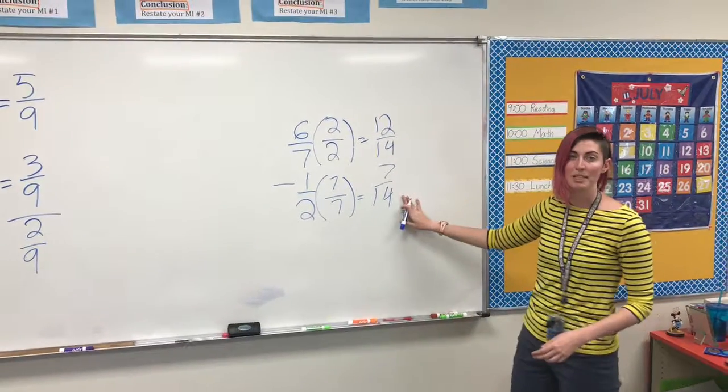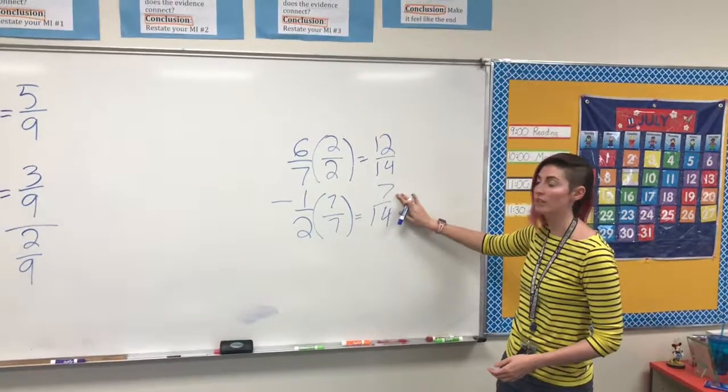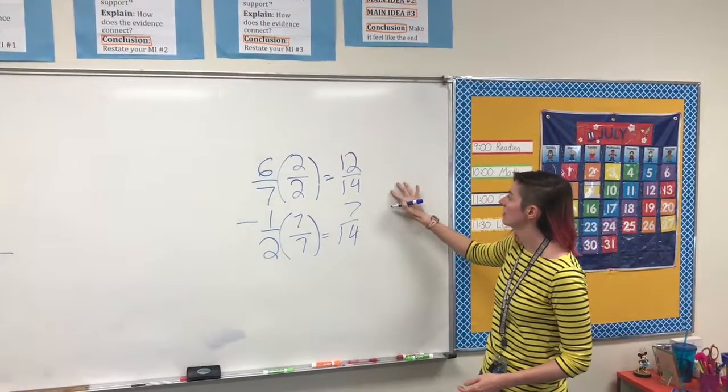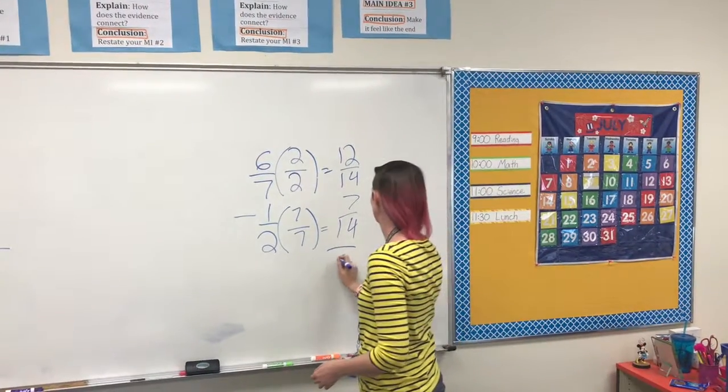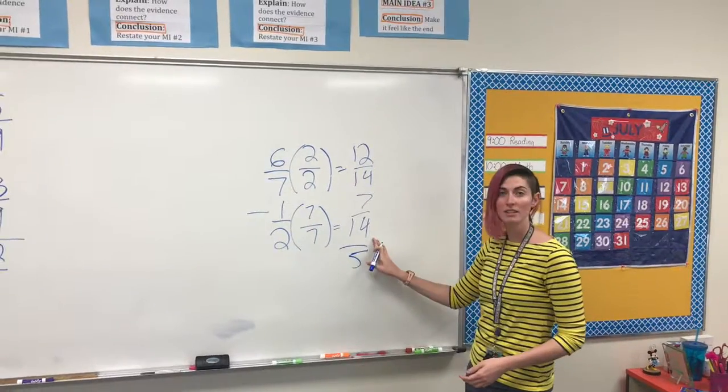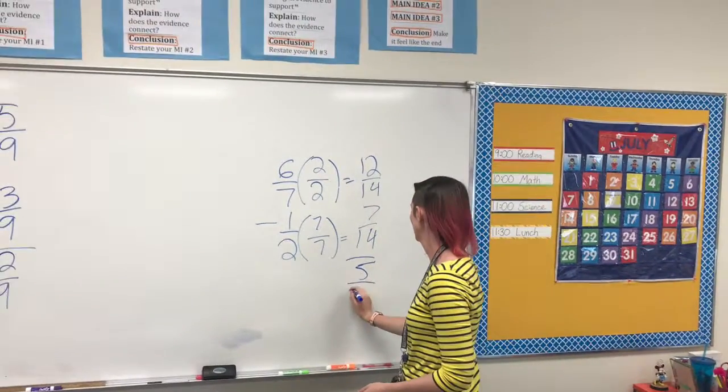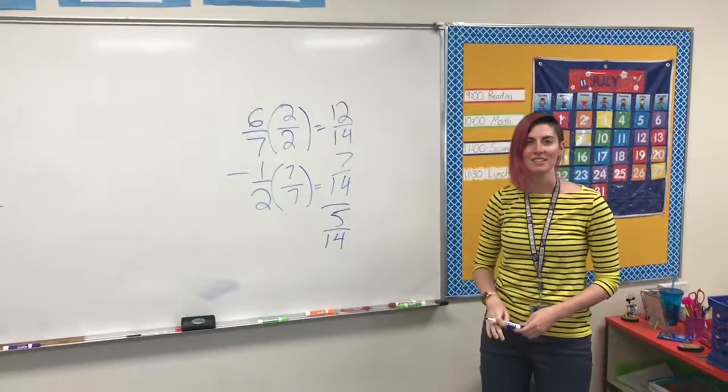Now that we have our common denominators, we can subtract, starting with our numerators. 12 minus 7 gets us 5. Denominator is going to stay the same. 5 14ths is our answer there.